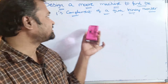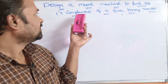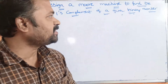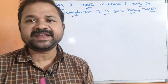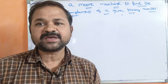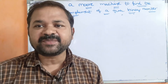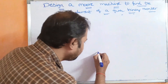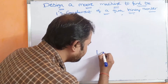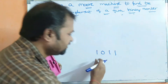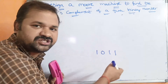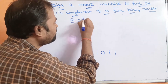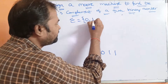Let us see this example: Design a Moore machine to find the 1's complement of a given binary number. We know that a binary number is made up of 0's and 1's. For example, the binary number 1011. So the input alphabet sigma contains 0 and 1.